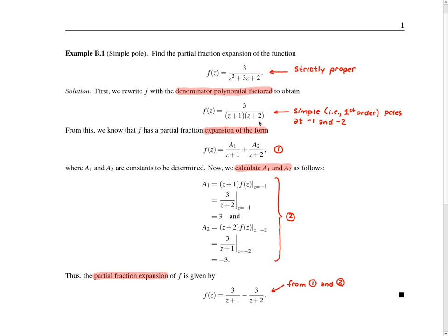Now we need to identify the form of the partial fraction expansion that we're seeking. Since f has two simple poles, the partial fraction expansion will have two terms, one for each pole. So the pole at minus 1 will contribute the first term, where a1 is a coefficient to be determined, and the pole at minus 2 will contribute the second term, with coefficient a2 to be determined. To compute a1 and a2, we use the formula for partial fraction expansion coefficients in the simple pole case.